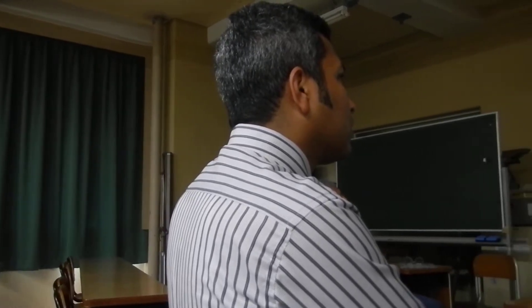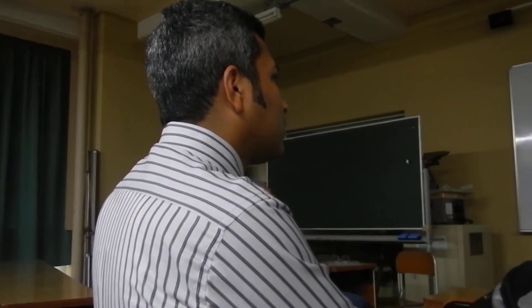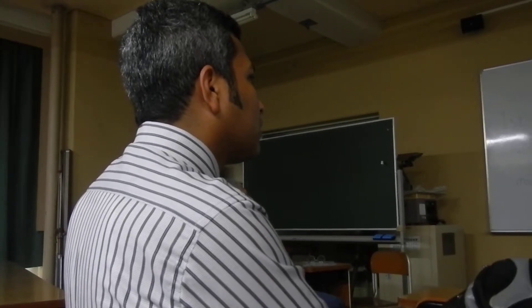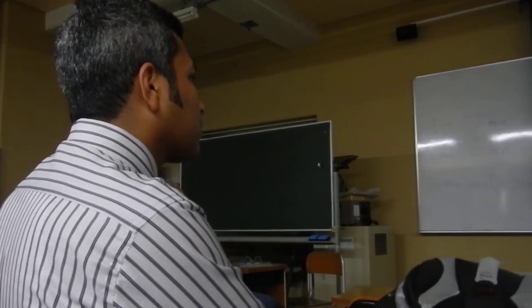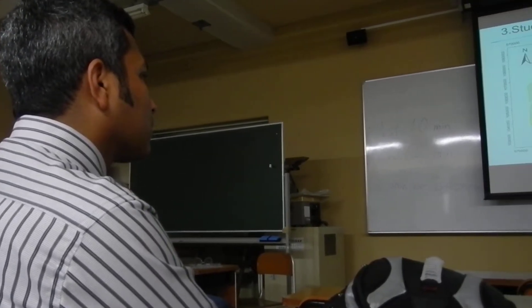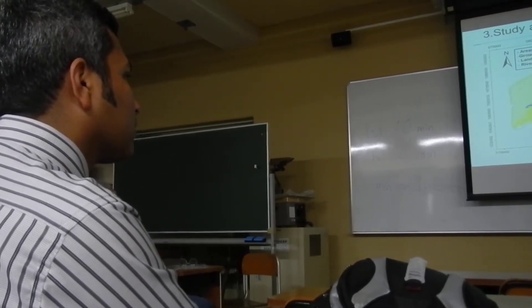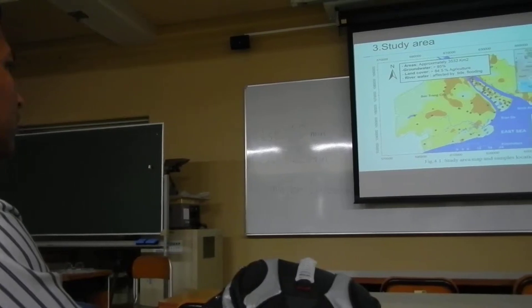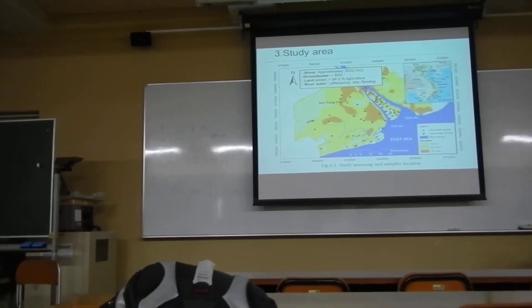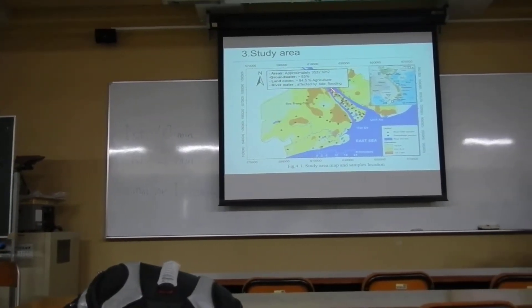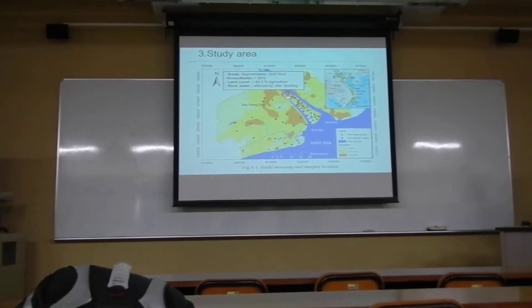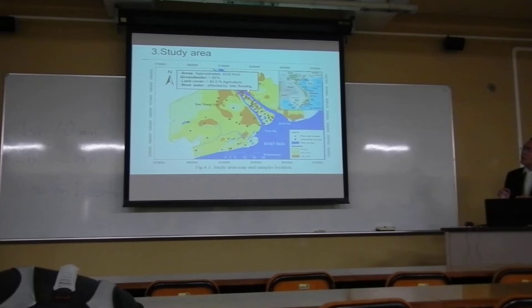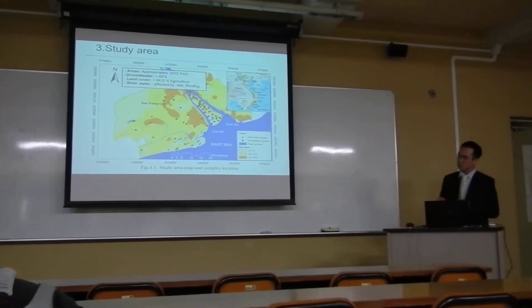In this location, more than 85% of people use groundwater for drinking and irrigation. Land cover is dominated by agriculture, and surface water is strongly affected by tidal influence, flooding, and seawater intrusion.